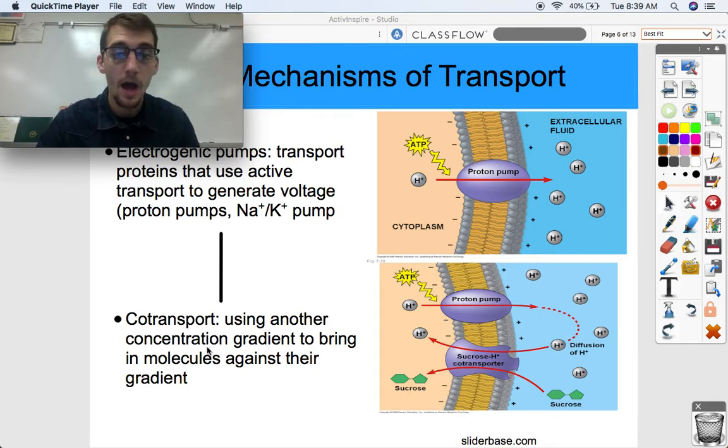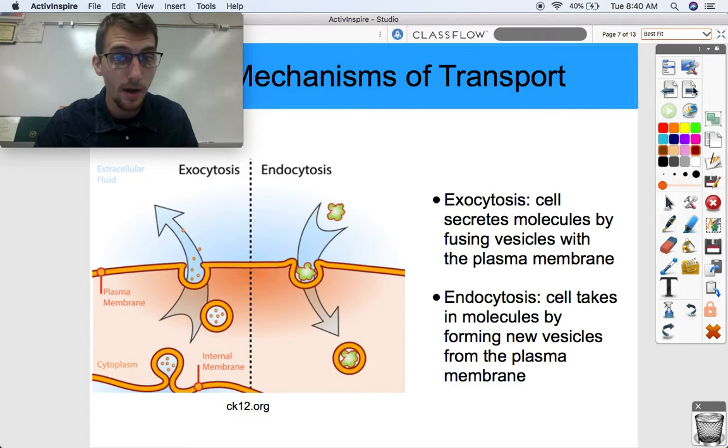Electrogenic pumps can be used in cooperation with a co-transporter, which is co-transport. That uses another concentration gradient to bring in molecules against their gradient. Here, our proton pump is putting out these hydrogen ions, also known as protons, out into the extracellular fluid. And then when these protons want to diffuse back in, they can diffuse back in through the sucrose hydrogen co-transporter, which allows sucrose to enter the cell against its concentration gradient. And again, sucrose is a larger molecule in comparison to a proton. So this is another form of active transport, co-transport.